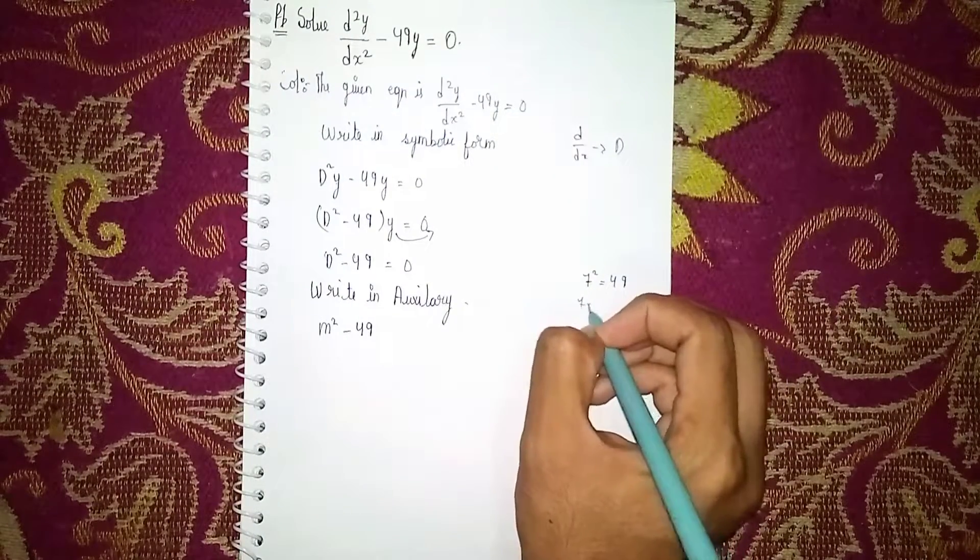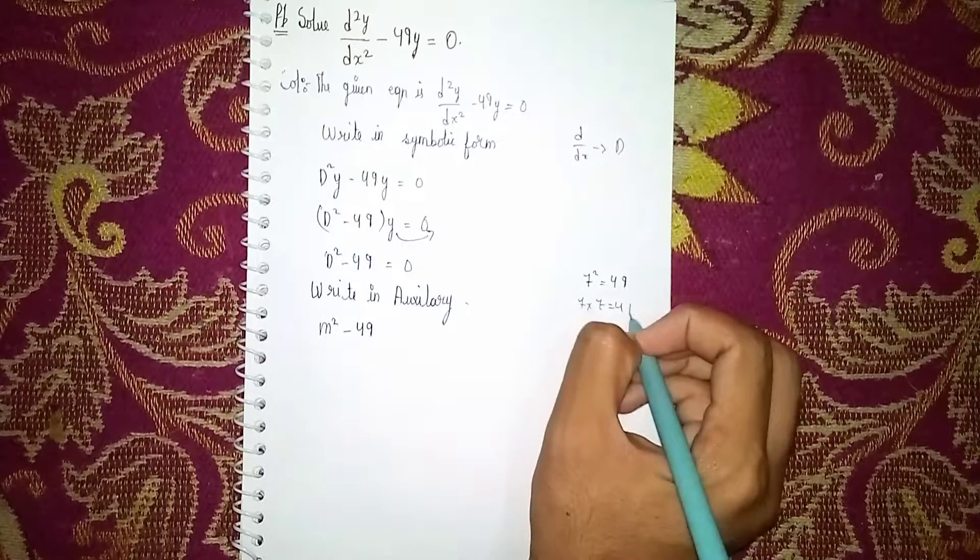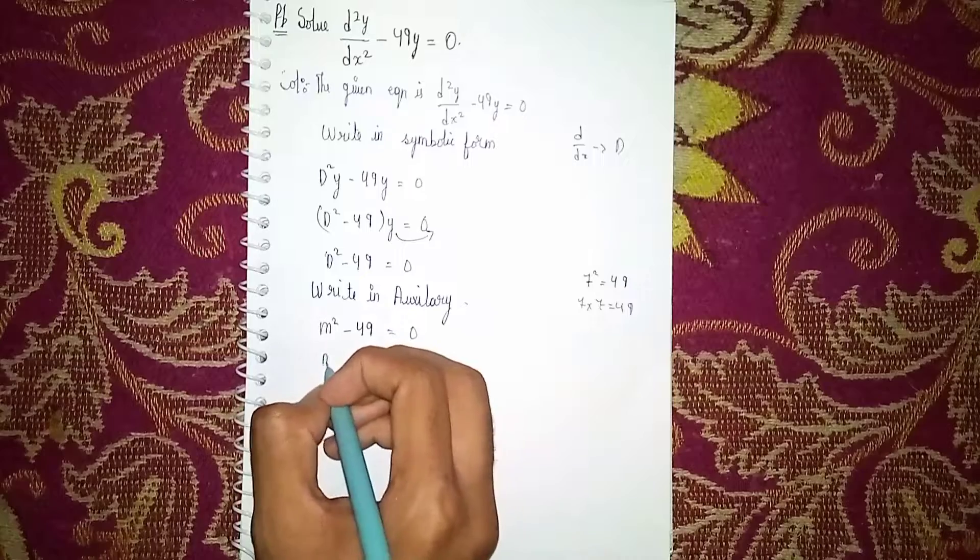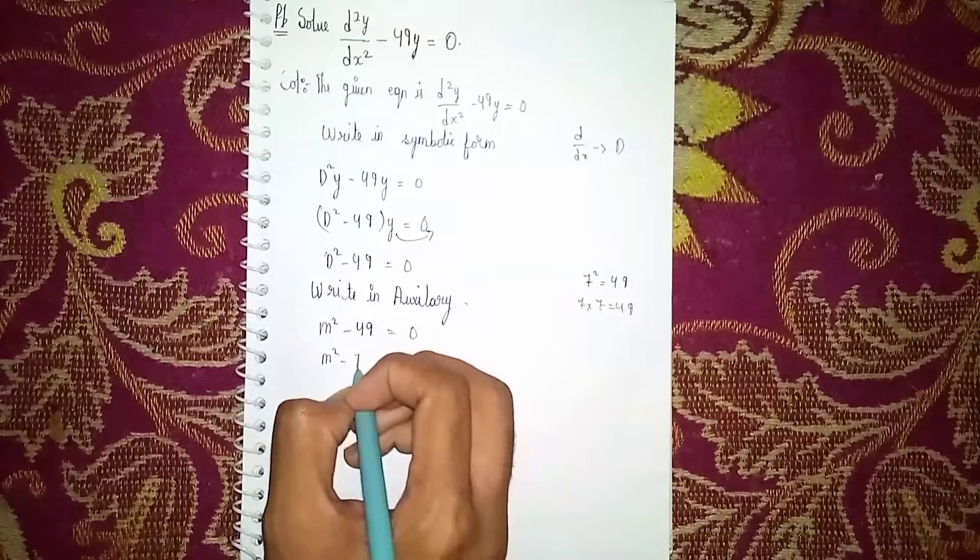We can write 49 as 7², or 7 × 7 = 49. It's equal to 0, then m² = m² - 7².